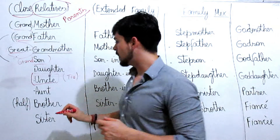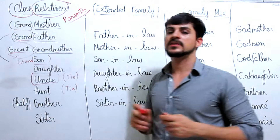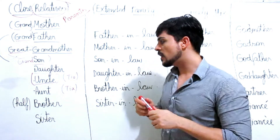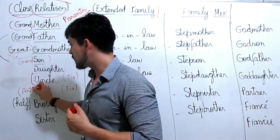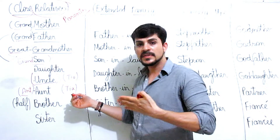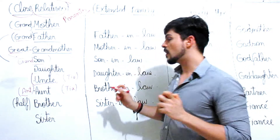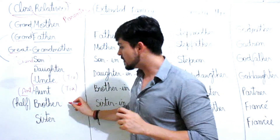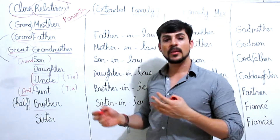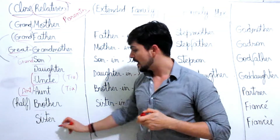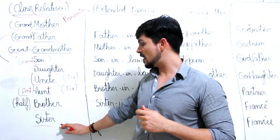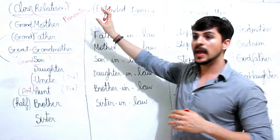The next word is 'uncle,' which means 'tio.' And 'aunt,' which means 'tia,' can also be pronounced in two ways: 'ant' or 'aunt.' The pronunciation 'ant' is generally used in the United States and sounds almost identical to 'ant' — the insect. I personally prefer 'aunt,' which sounds a little different from 'ant.' But it's up to you. The next word is 'brother' — you can say 'brother' in British or 'brother' in American. And 'sister' or 'sister' means 'irmã.' So these are the close relatives.